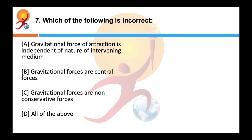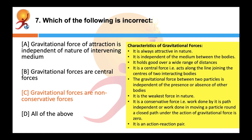Which of the following is incorrect? The answer is C. The characteristics of gravitational forces are: it is always attractive in nature; it is independent of the medium between the bodies; it holds good over a wide range of distances; it is a central force, acting along the line joining the centers of the two interacting bodies; it is independent of the presence or absence of other bodies; it is the weakest force in nature; and it is a conservative force, meaning work done by it is path independent — work done moving a particle around a closed path under gravitational force equals zero.